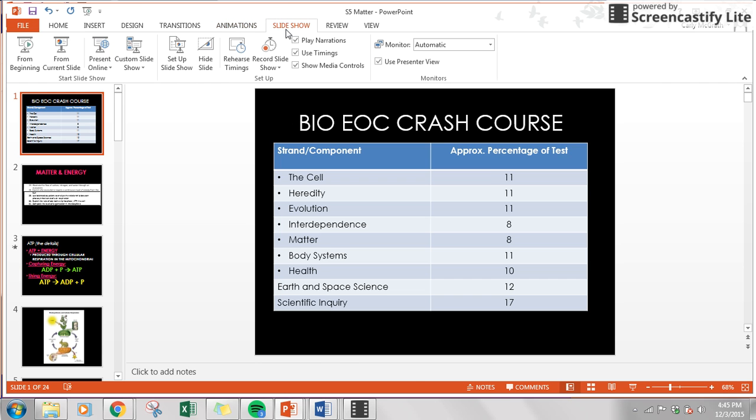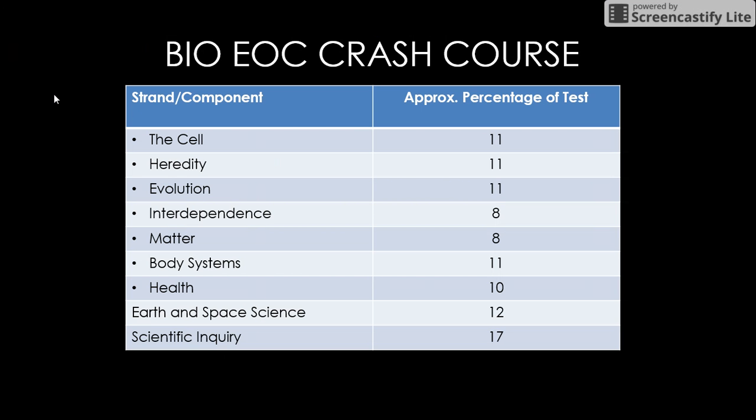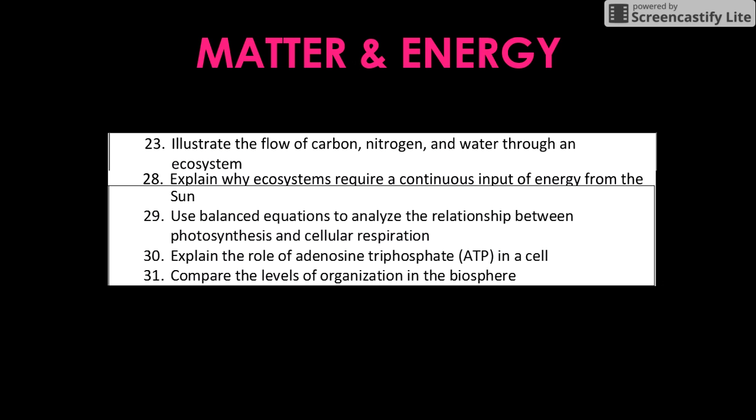Alright, this is part five of the EOC crash course, so we are focusing on matter and how matter is used in life. Key things we're going to be looking at are some nutrient cycles like the water cycle, carbon cycle, also focusing on photosynthesis and cell respiration and ATP.